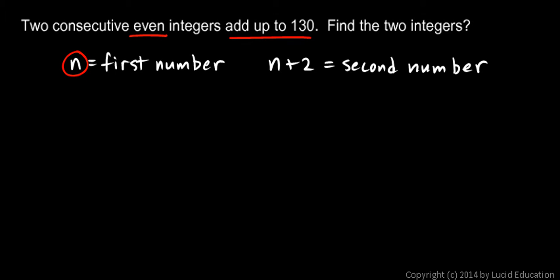That means the first number, n, and the second number, n plus 2, have to add up to 130. So I'll write that. I'll write n plus n plus 2 equals 130.